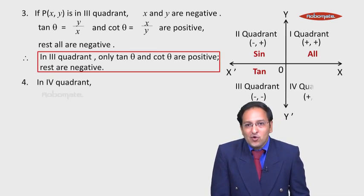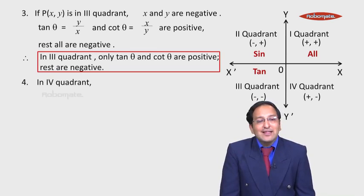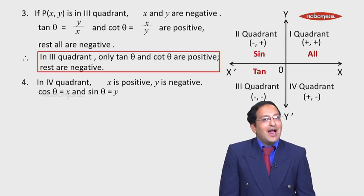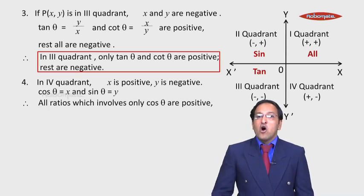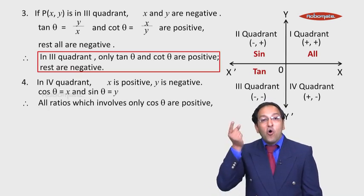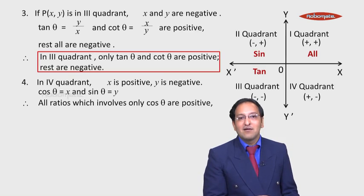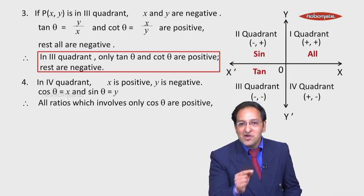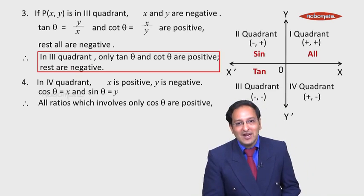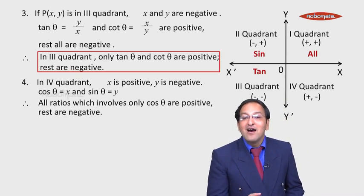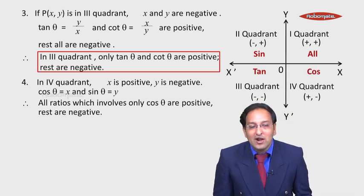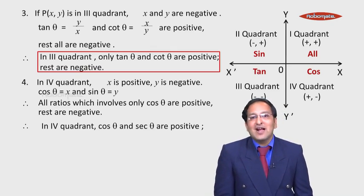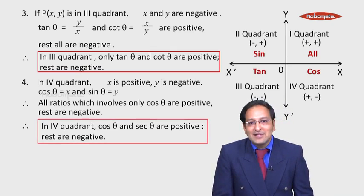Fourth point: in the fourth quadrant, x is positive and y is negative. Since cos θ equals x and sin θ equals y, only ratios involving cos θ — that is, cos and sec — are positive, because only x is positive. Therefore, in the fourth quadrant, cos θ and sec θ are positive and the rest are negative.